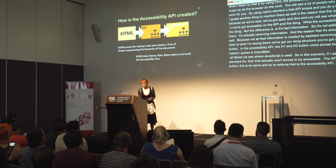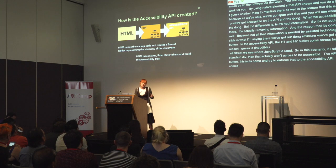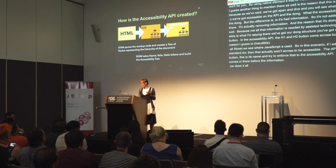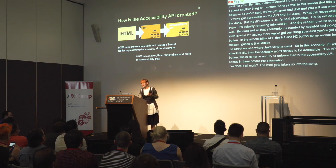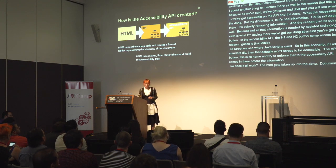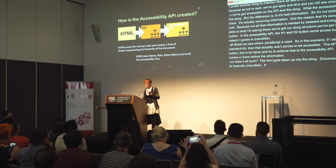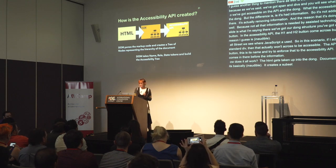So how does it all work? The HTML and CSS get taken up into the DOM — the document object model — which is a hierarchical presentation of nodes and objects of that document. The DOM then creates a subset of itself into the accessibility API. That is how the accessibility tree is created.